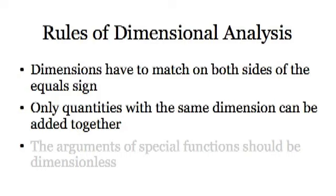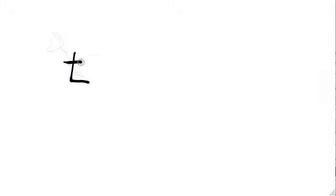The second rule of dimensional analysis is very similar to the first rule. Just like dimensions have to match on both sides of an equal sign, whenever you add two quantities together, they must have the same dimension. For example, adding together distance and time, that doesn't make any sense. 3 seconds plus 4 meters doesn't mean anything.